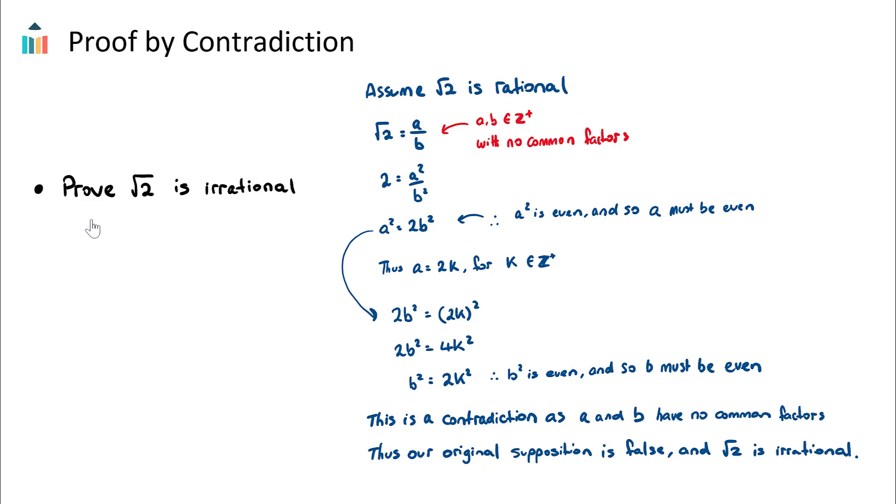So let's go through the steps. If we want to prove that √2 is irrational, let's take the opposite stance here. Let's start with the opposite of the conclusion. Let's assume √2 is rational.